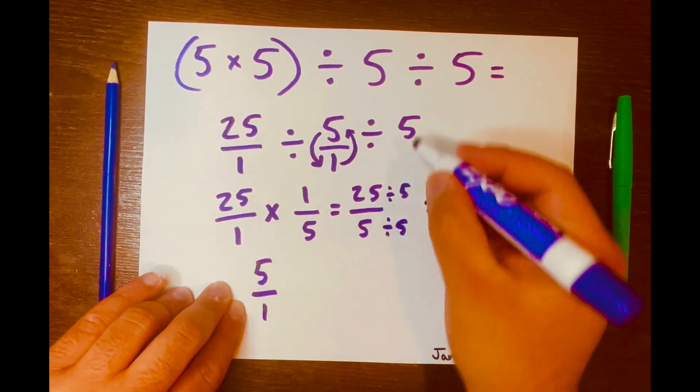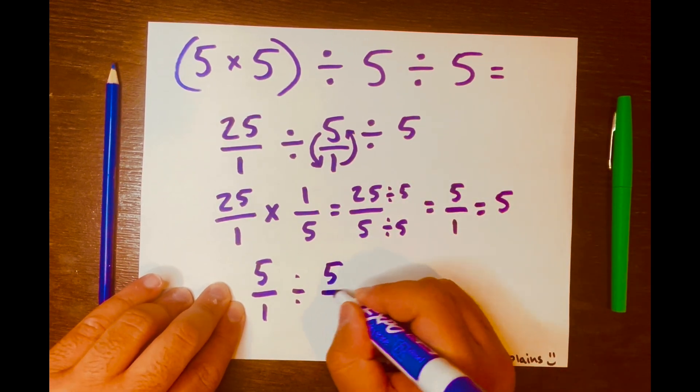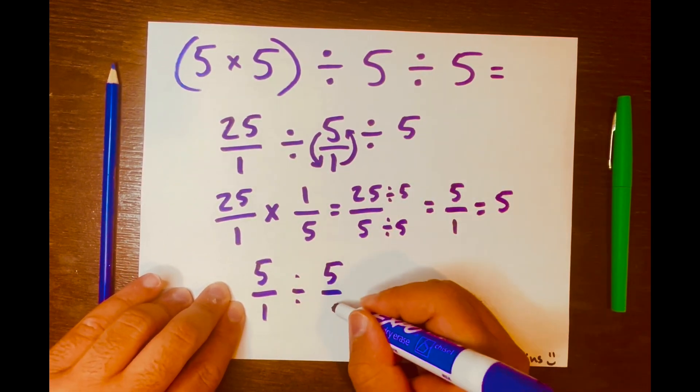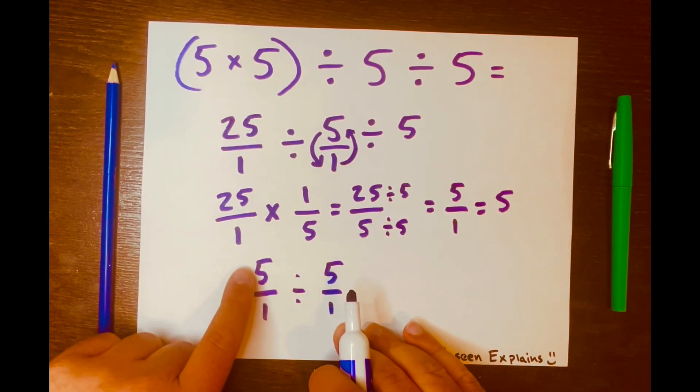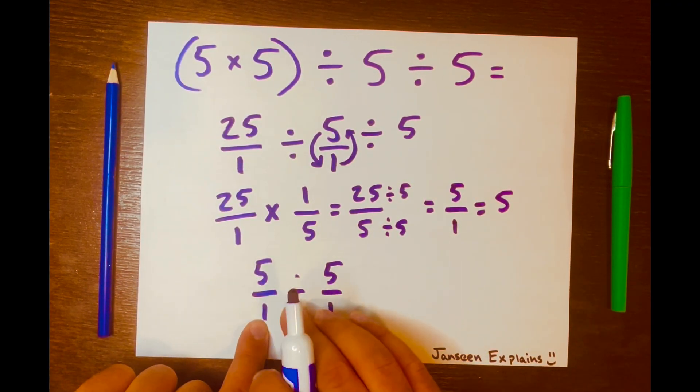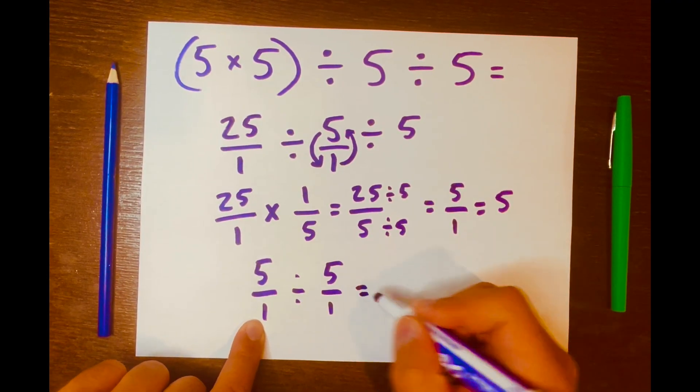And then I'll bring down the division and the 5 down, and I'll turn this 5 into a fraction. So now we have 5 divided by 1, or 5 over 1, divided by 5 over 1.